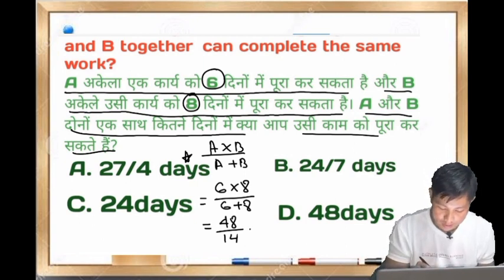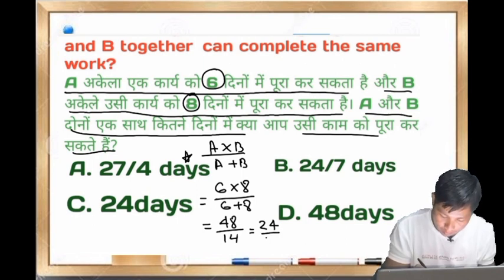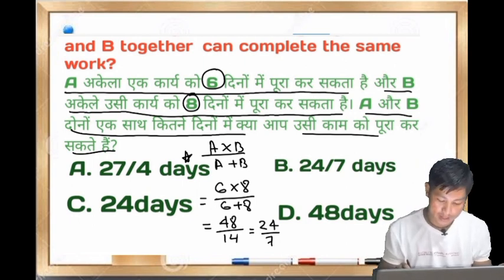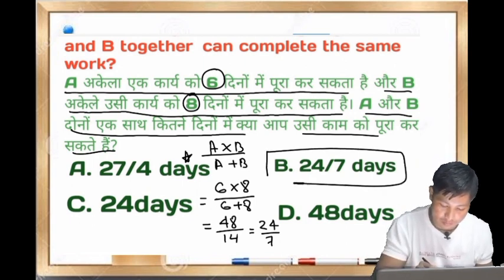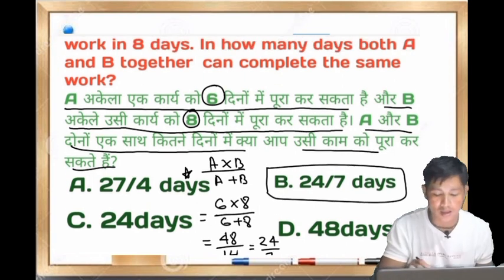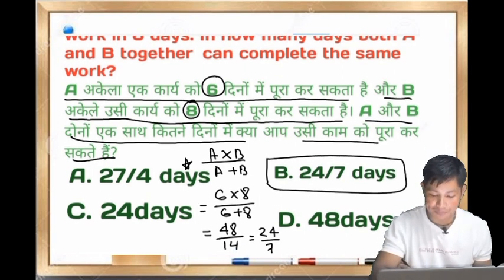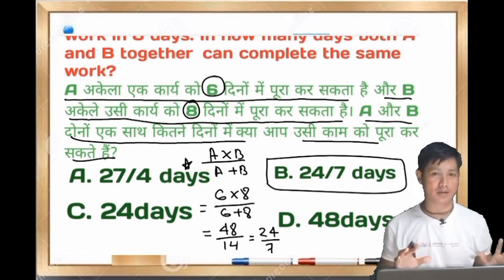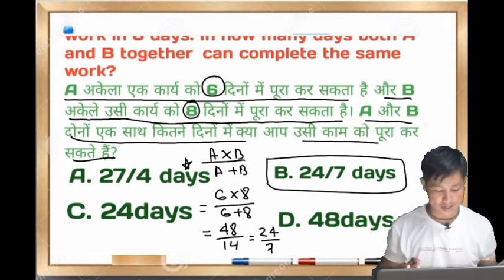48 divided by 14 gives us 24 divided by 7, which is approximately 3 and 3/7 days. So the answer is 24 by 7 days. We can verify this is the correct answer.